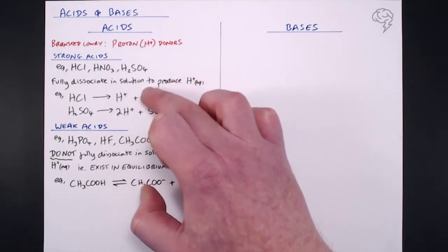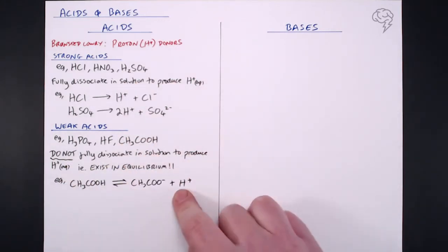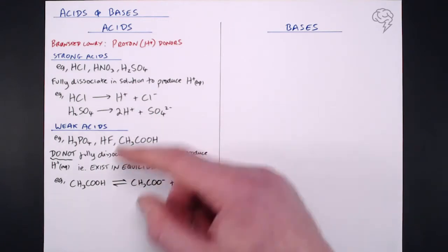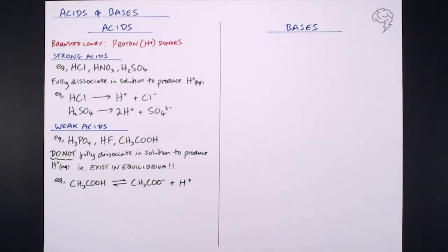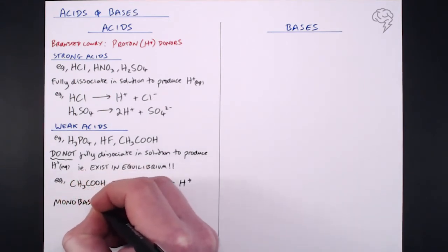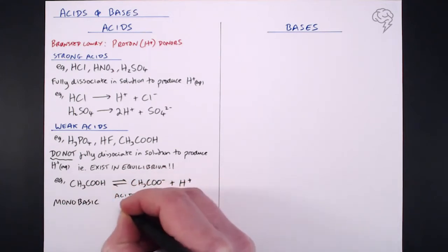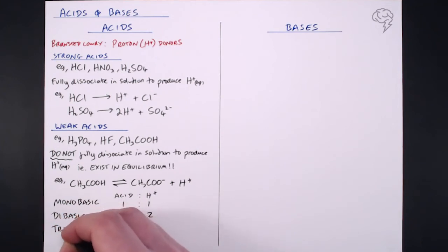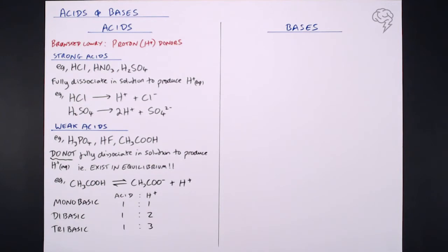So to summarize: strong acids fully dissociate, weak acids do not fully dissociate - they exist in equilibrium. Now, acids can also be different types based on how many hydrogen ions they release into solution. We can have mono-basic acids, which for every one mole of acid release one mole of hydrogen ions. A di-basic acid could potentially release two, like H2SO4, and a tri-basic acid could potentially release three hydrogen ions per molecule, like H3PO4. Know these terms - mono-basic, di-basic, and tri-basic - as they tell you how many hydrogen ions are released from each molecule. Those are our different types of acids, strong and weak.